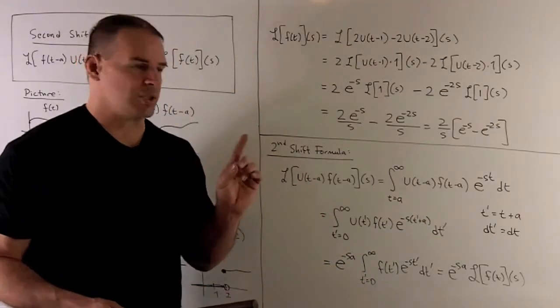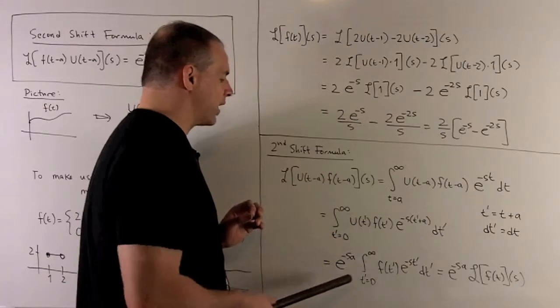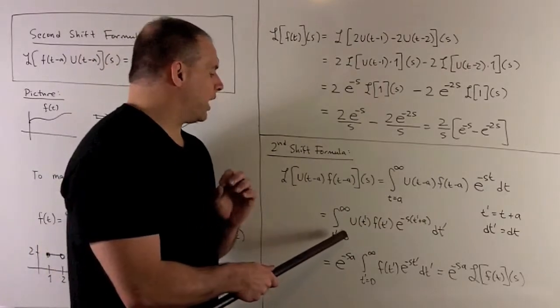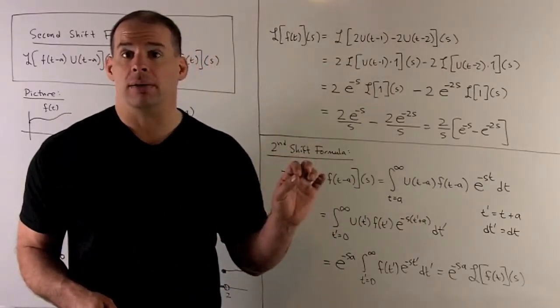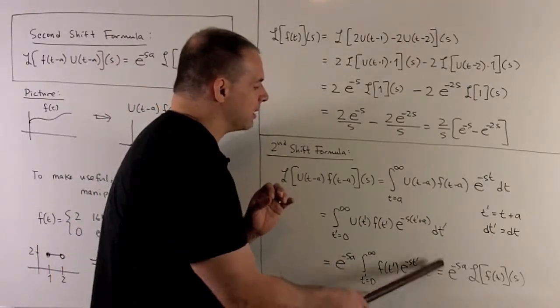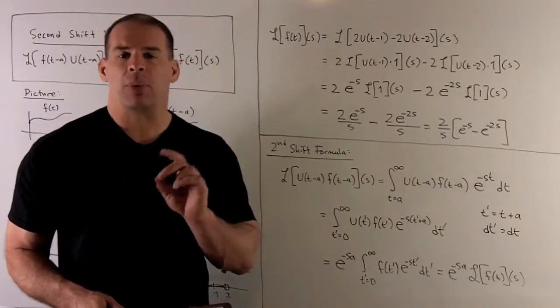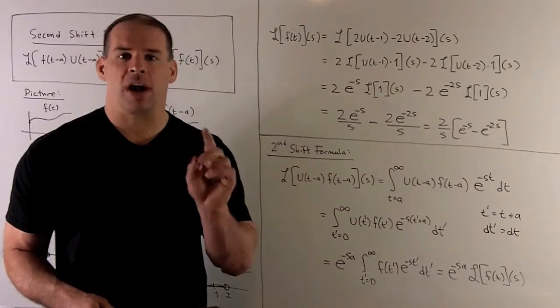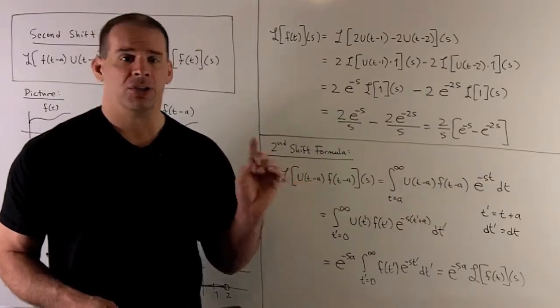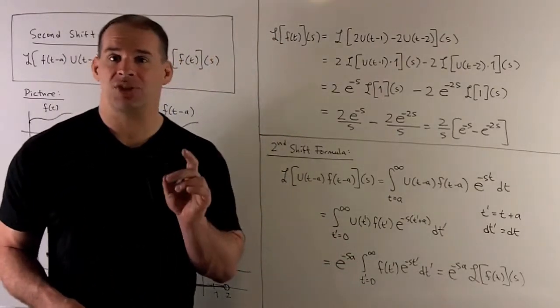All right, let's pull this apart. First thing I can do, I can factor out e to the minus s, a. Okay, there's no t in there, so that comes out in front. Then u of t prime. If we're looking at the range where we're bigger than zero, that's always equal to one. So it's like it's not there. So what are we left with? If you know, well, this is just going to be the Laplace transform of f, except we're in terms of t prime instead of t. That's not a problem. We're doing integration. Okay, what we integrate with respect to is always a dummy variable. So we can change that back to t with no penalty. So what comes out is going to be e to the minus s, a, Laplace transform of f of t. And that's our second shift formula.